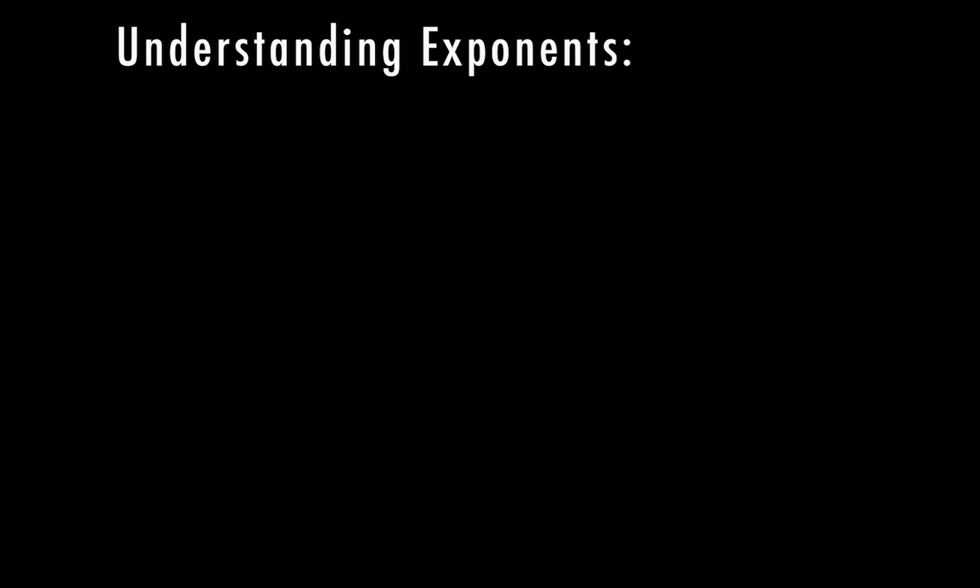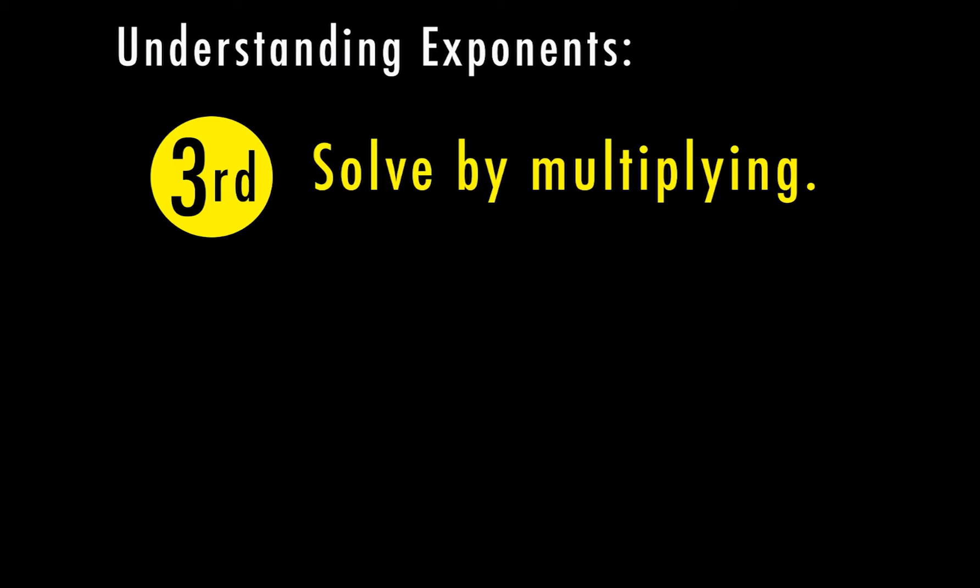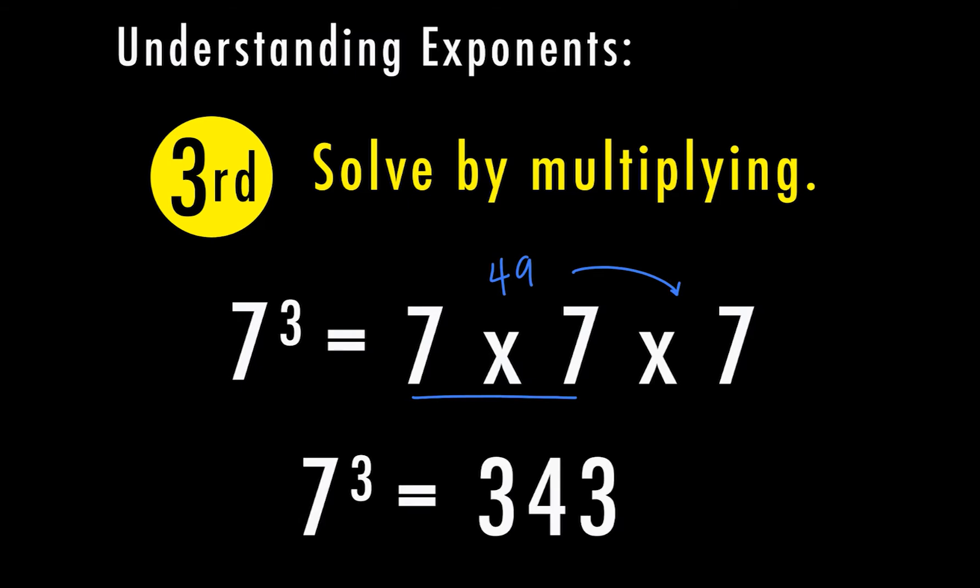So once we've written it out, the third step is to solve by multiplying. So here again, we have our 7 to the third power, which equals 7 times 7 times 7. So 7 times 7 is 49, and then 49 times 7 equals 343. So 7 to the third power is equal to 343.